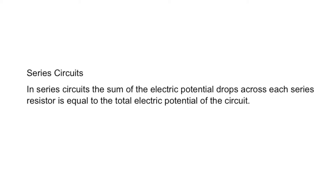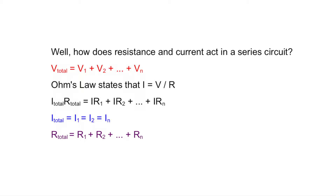Let's start off with some series circuits. In series circuits, the sum of the electric potential drops across each resistor is equal to the total electric potential of the circuit. The total electric potential is equal to the electric potential of resistor 1 plus the electric potential of resistor 2, all the way up to electric potential of resistor sub n.